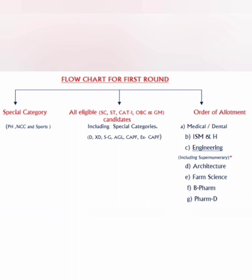The first category is special categories, which are basically physically handicapped, NCC cadets, or sports category students. Then all eligible candidates, which can be from SC/ST, Category 1, OBC, and general merit candidates. The third is the order of allotment, which depends on preference — as shown in the center of this flowchart.